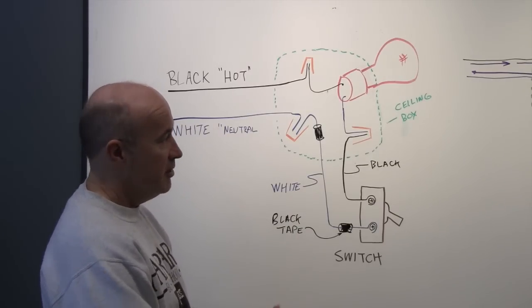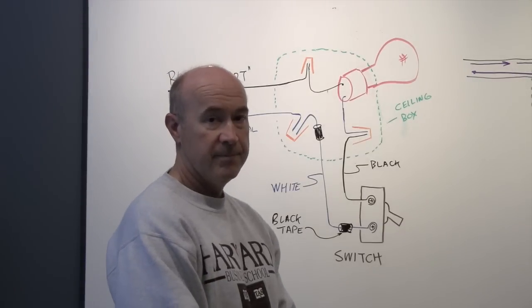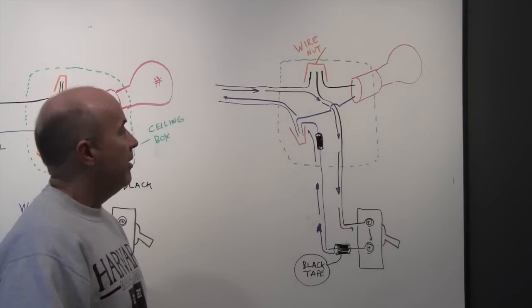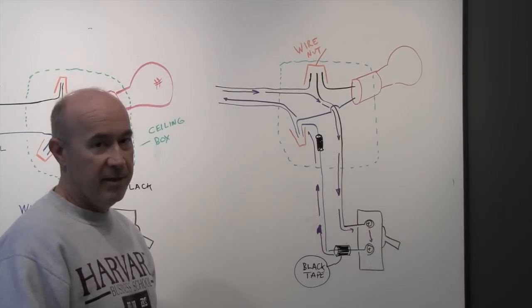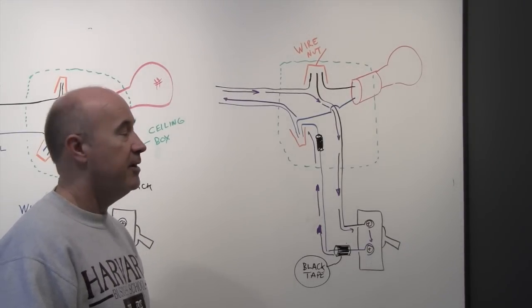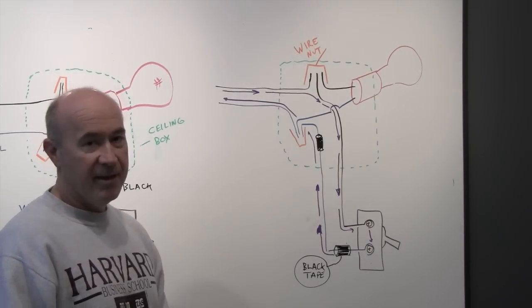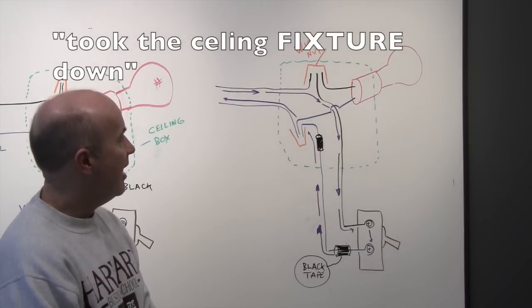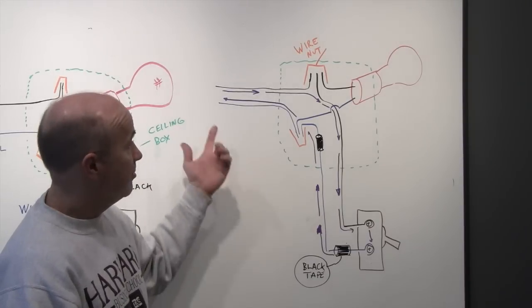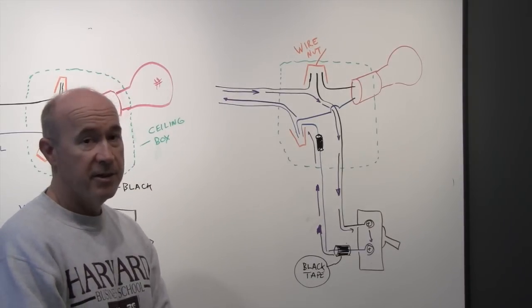So, the other situation people can get into is this. Alright, so maybe somebody came into this situation, they're not familiar with home wiring. They took everything out of the box, they took the ceiling down, undid all the wire nuts, so they come back. What they see is black wires and white wires coming into the box.